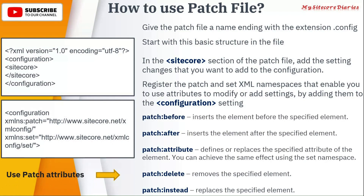For patching, you have to use the patch attributes. Patch attributes include: patch:before, which is used to insert an element before the specified element — it will add before whichever element you specify. patch:after inserts after that element. Then there is patch:attribute, which replaces the specified attribute of the element. You can achieve the same effect using set as well — it is used to update any attribute of that node.